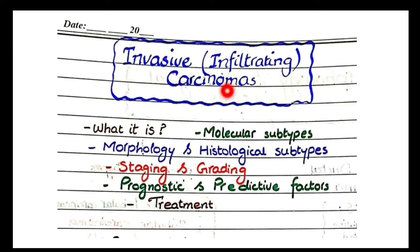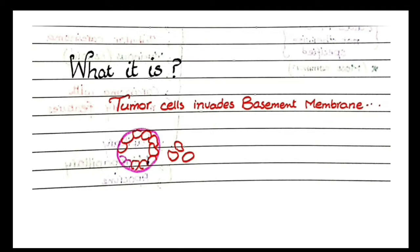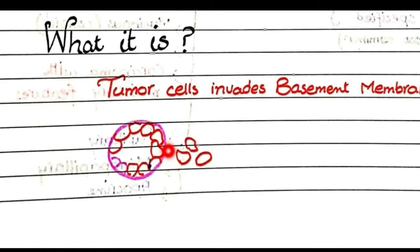What is an invasive or infiltrating carcinoma of breast? It is a condition in which the tumor cells invade the basement membrane. You can see that the tumor cells are invading the basement membrane and trying to form a separate mass or separate group. This is in contrast to ductal carcinoma or lobular carcinoma in situ.